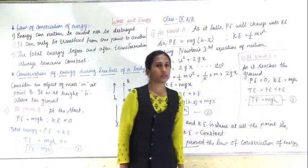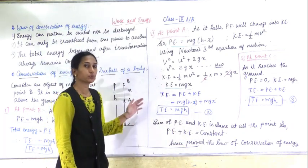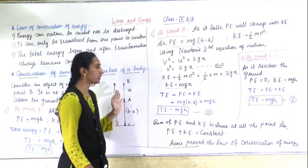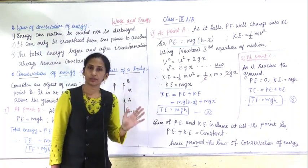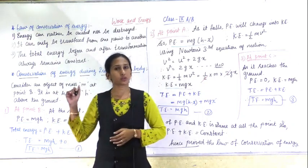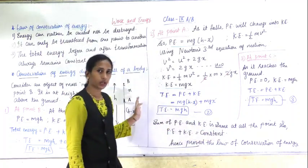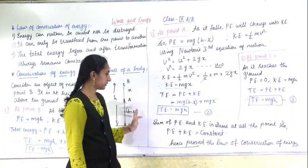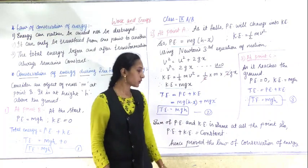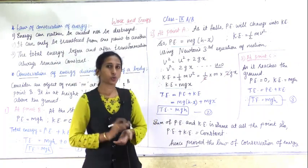At all three different points, the total energy comes out to be the same. This proves that at any point, the total energy always remains the same — only the potential energy gets converted into kinetic energy. Hence the law is proved: the sum of kinetic energy and potential energy is always constant. Potential energy plus kinetic energy equals a constant.